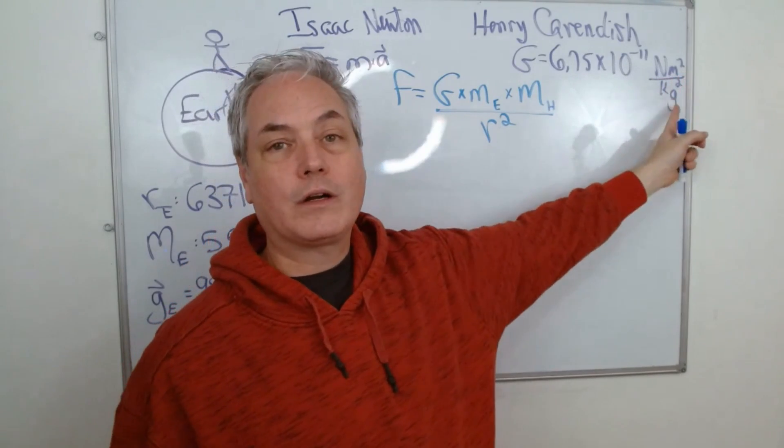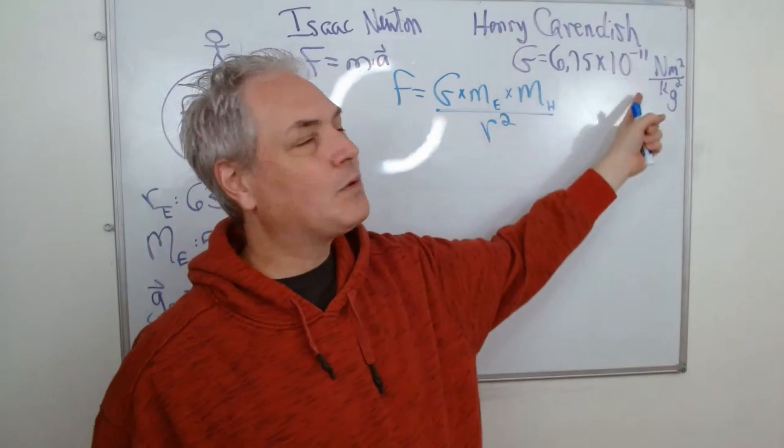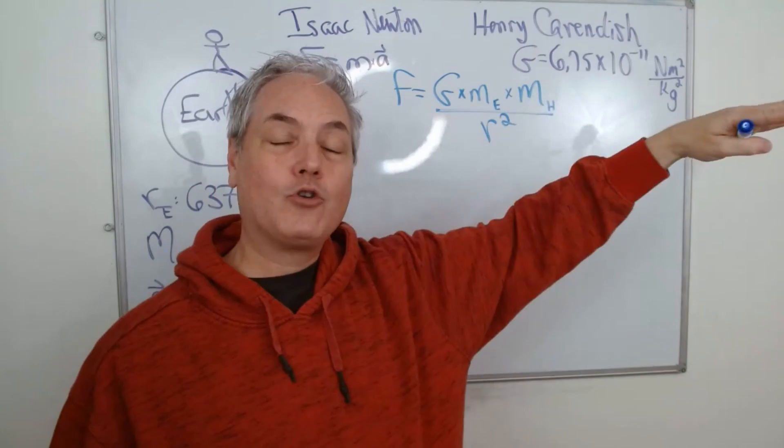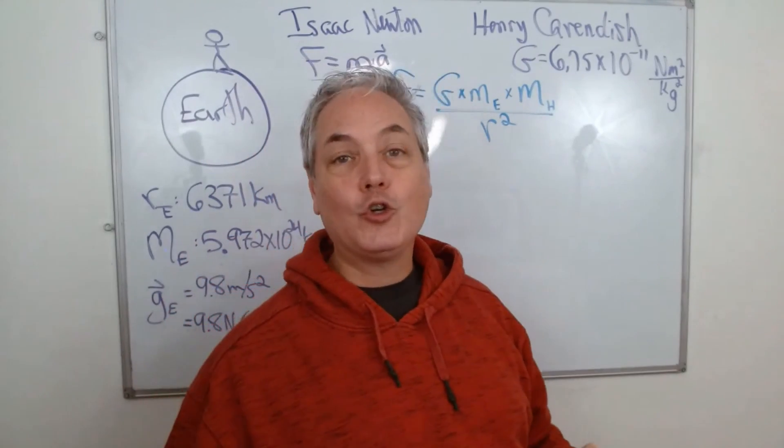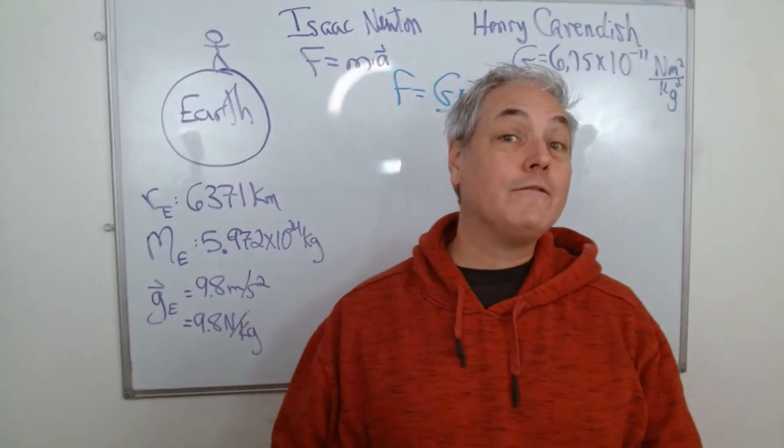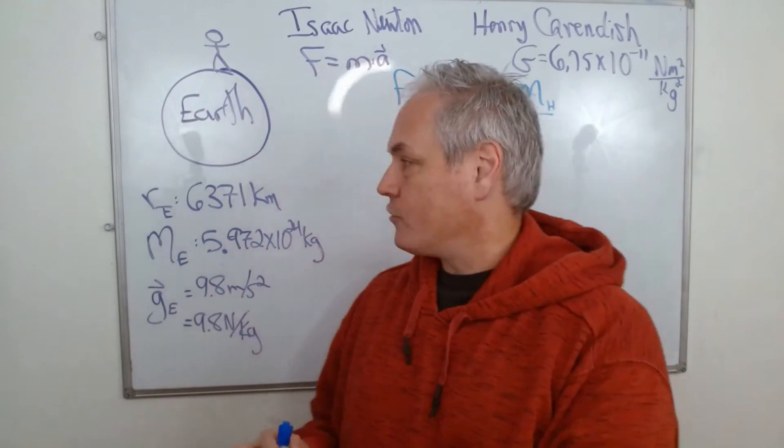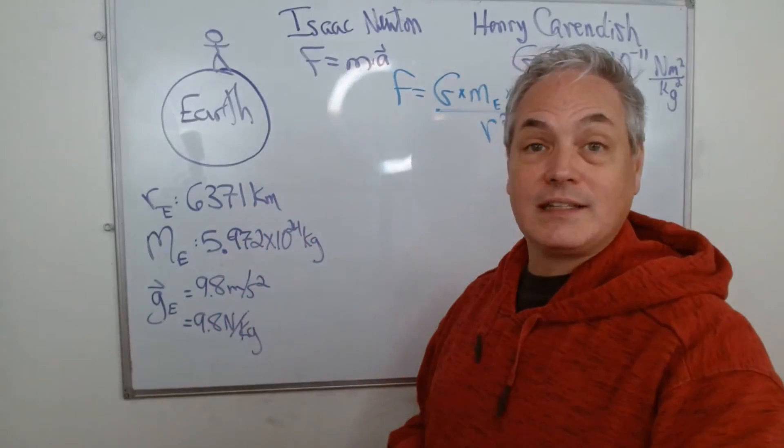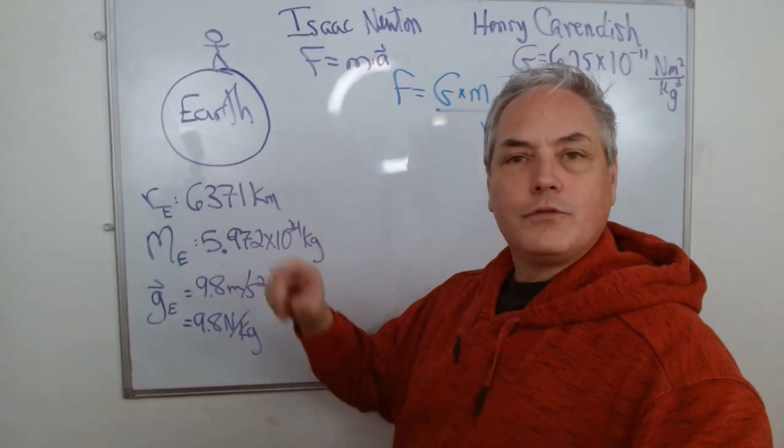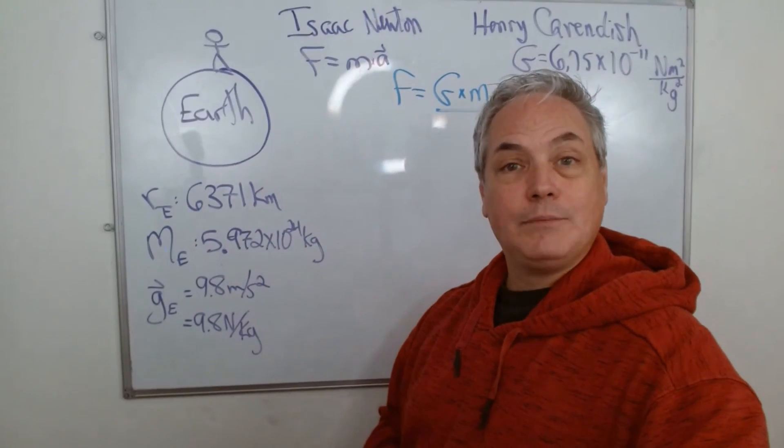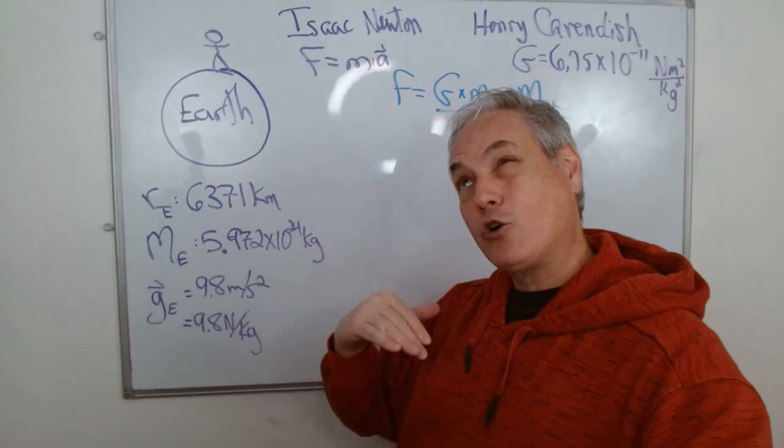So his number, let's go back here, his number was 6.75 times 10 to the power of negative 11 newton meter squared per kilogram squared. So this is what he came up with. As we progress, scientists were able to look at other data and we confirmed that number to about 1% in accuracy. So let's see what other scientists noticed.